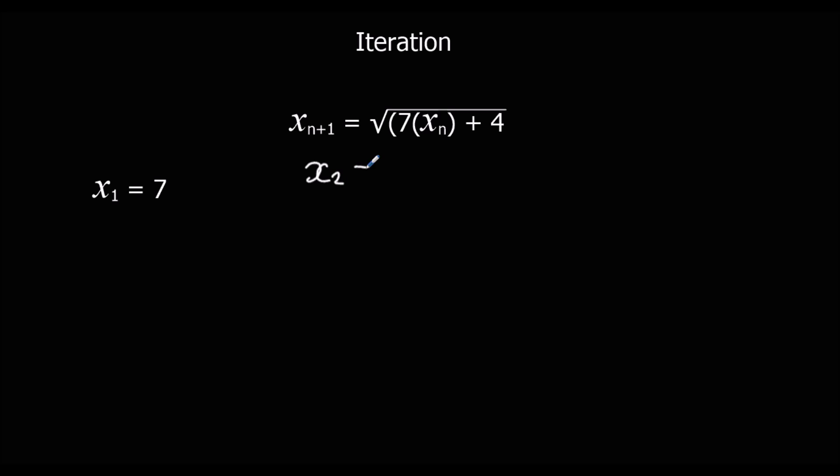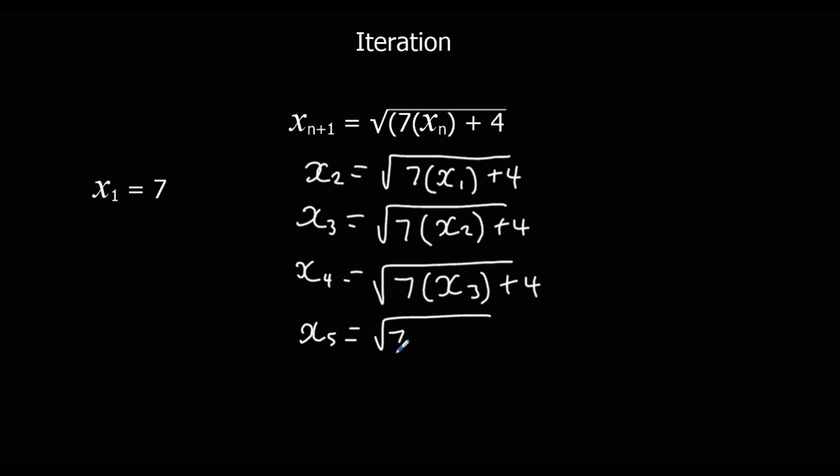So if I want to work out x2, it's the square root of 7 times x1 plus 4. If I want to work out x3, it's the square root of 7 times x2 plus 4. x4, square root of 7 times x3 plus 4. So we just follow the same pattern every time, and we can keep going 7 times x4 plus 4.